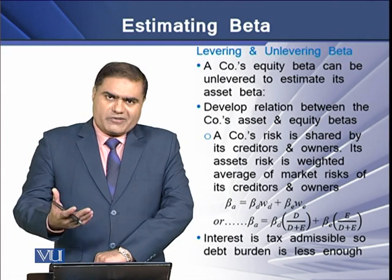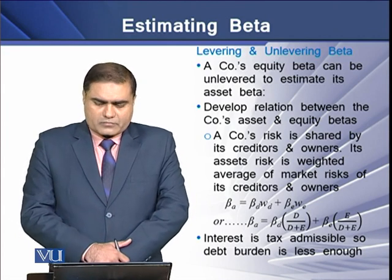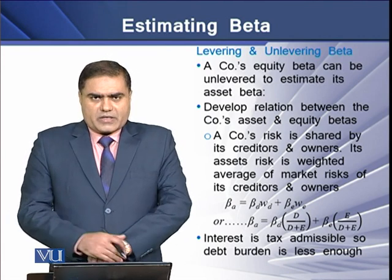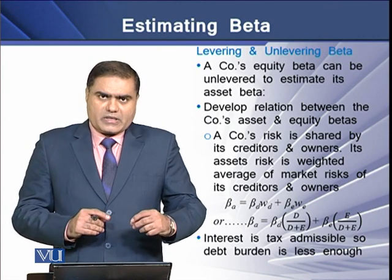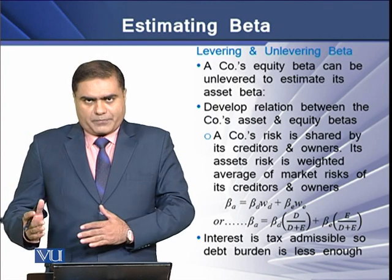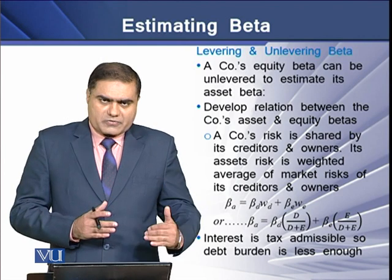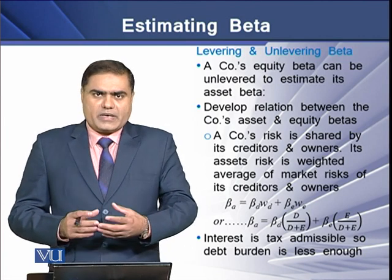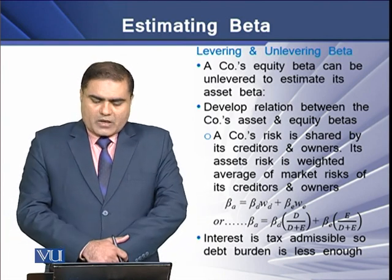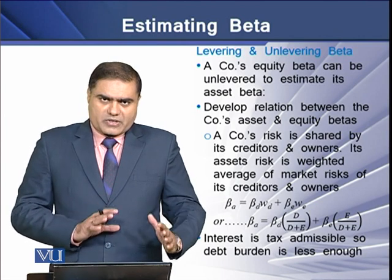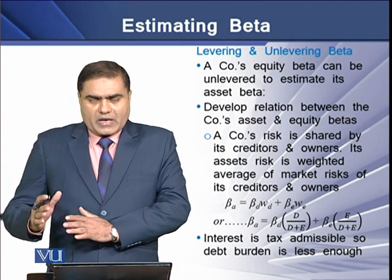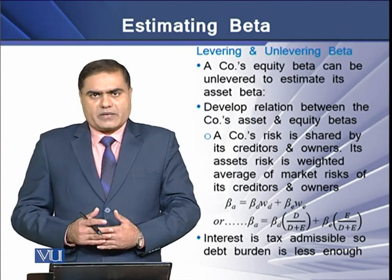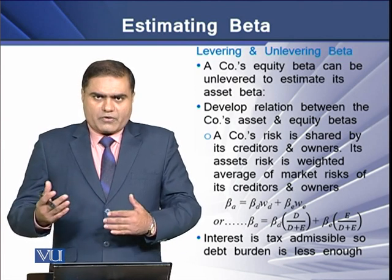To understand how unlevering and levering of beta takes place: a company's equity beta can be unlevered to estimate the asset beta. We develop a relationship between the market risk of a company's assets and the market risk of its equity. A company's risk is shared by its creditors and owners, so the asset risk is the weighted average of the market riskiness of its debt and the market riskiness of its equity. We can derive an equation: asset beta equals the weighted average beta of debt and equity.